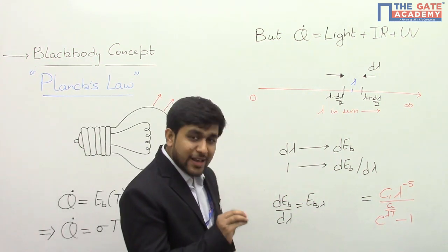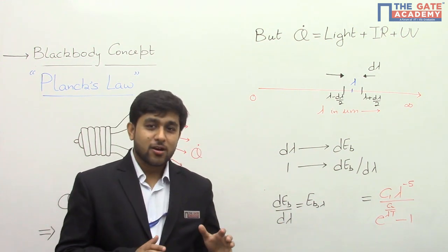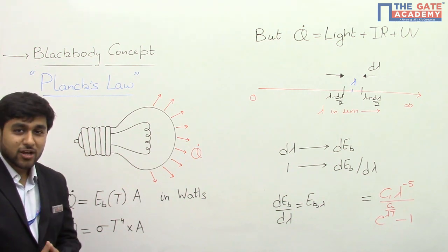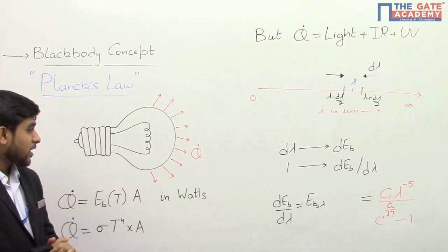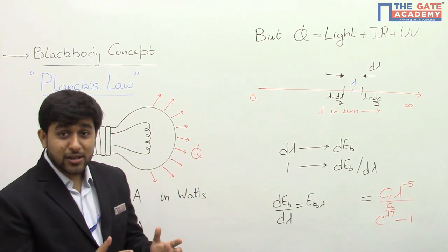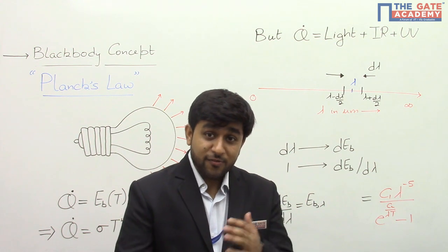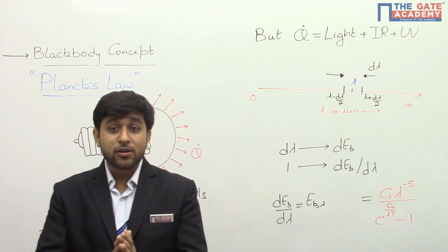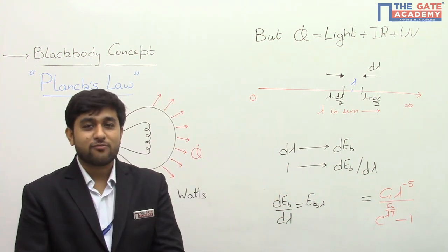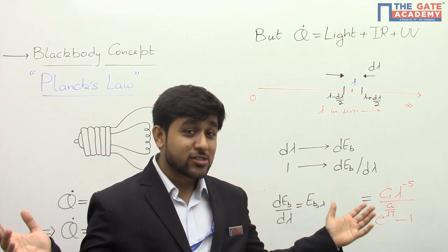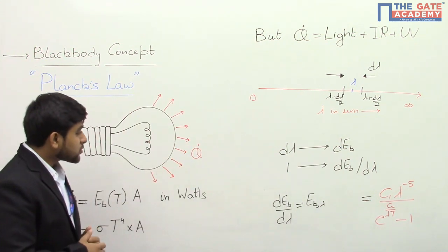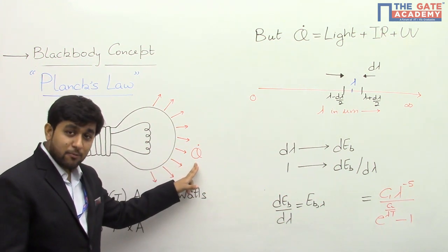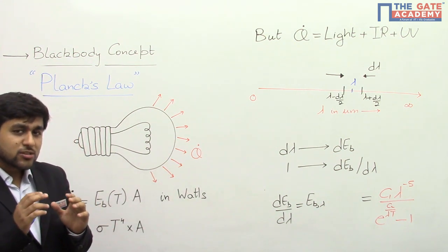Planck's law gives a term known as monochromatic emissive power, and we will come to its definition by the end of the video. You can see there is a conventional tungsten filament bulb on the board. When electric current is passed through this bulb, its filament gets heated up to a temperature of about 2000 Kelvin, and because of that temperature it starts emitting a significant amount of light, which allows us to see objects around the room.